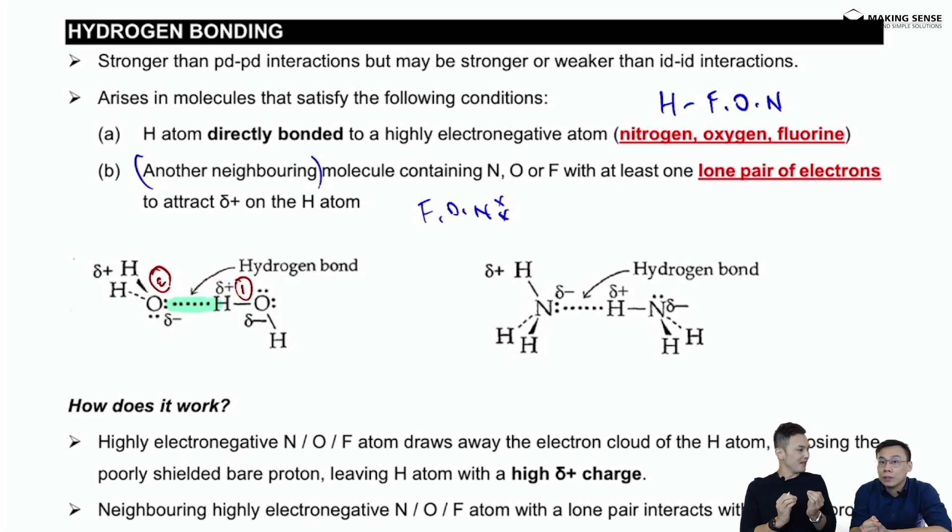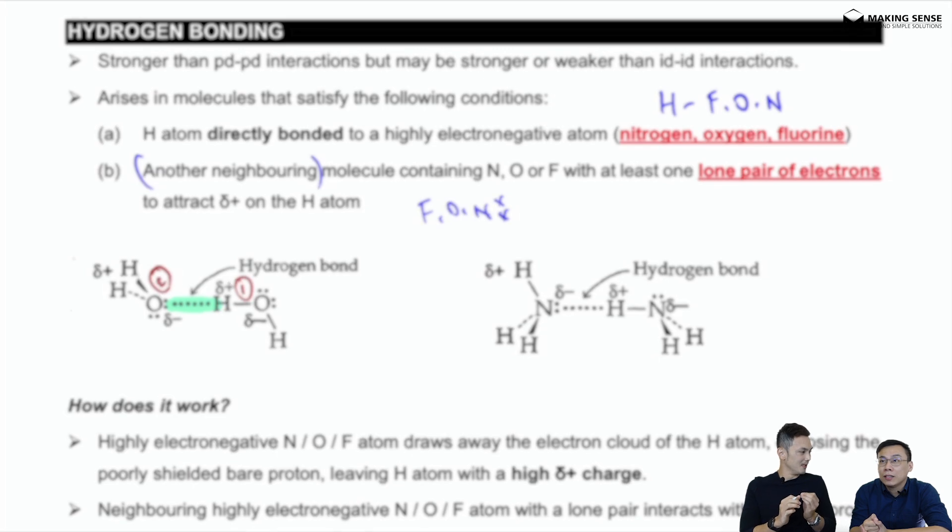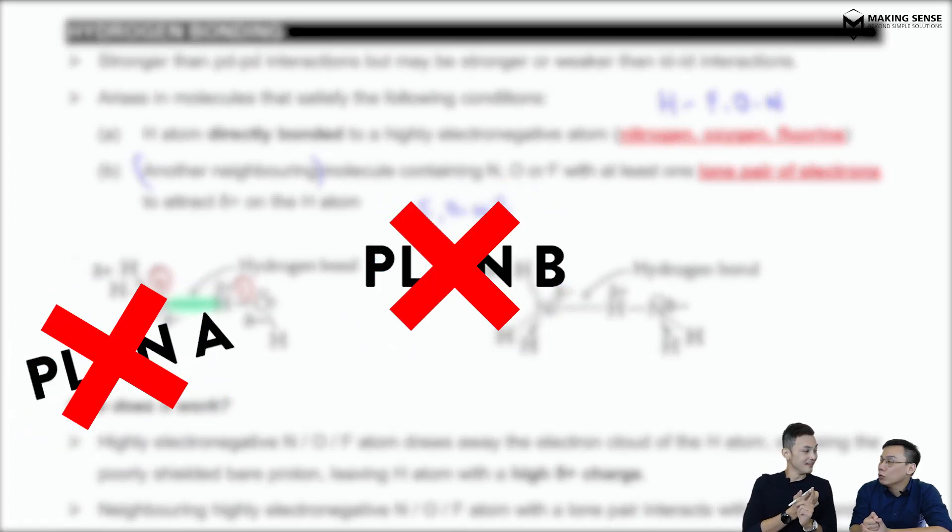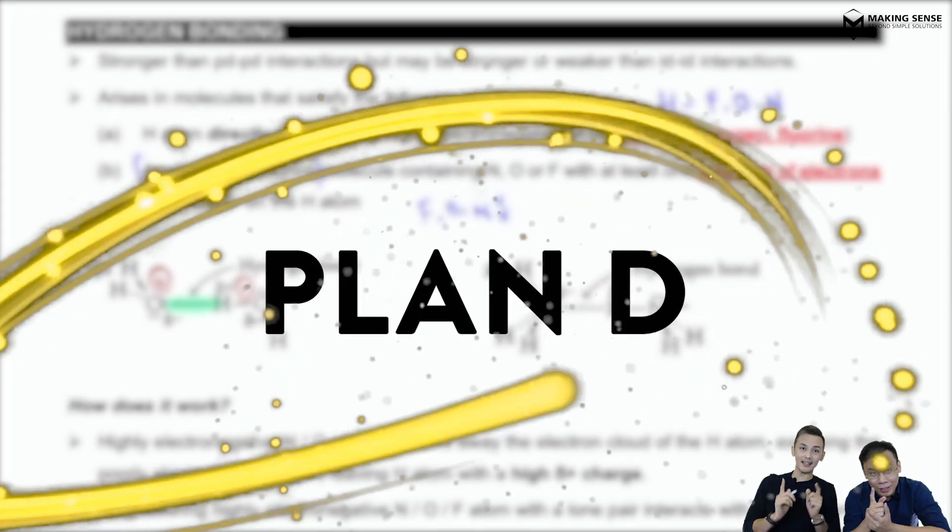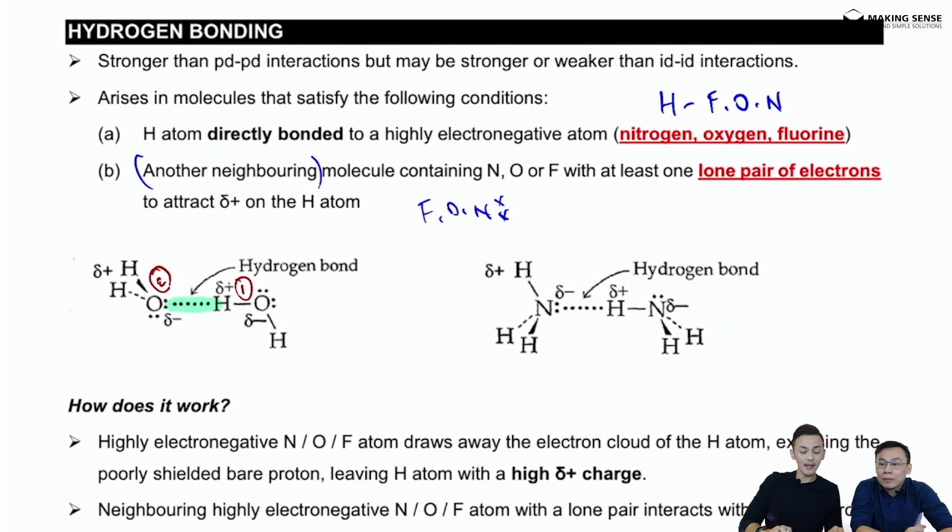When we draw hydrogen bonds, remember there is an acronym you have to follow. It's not plan A, not plan B, not plan C—it's plan D. What does plan D stand for? P stands for polarity—the delta plus and delta minus. You can see here we have to label delta plus and delta minus. L stands for lone pair—the lone pair on either N, O, or F. The lone pairs must always be drawn.